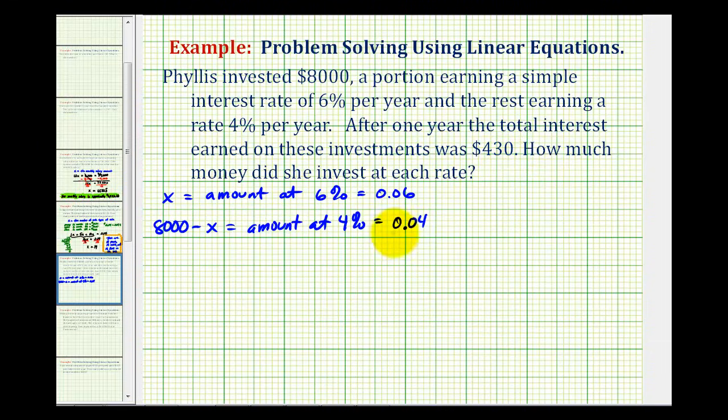We can write an equation to model this situation. We would have 0.06 times x dollars. This would be the amount of interest earned at 6% plus 0.04 times 8,000 minus x. This is the amount of interest earned at 4%.